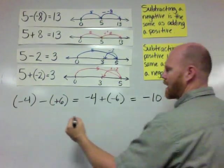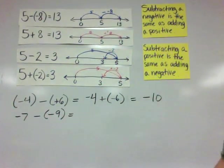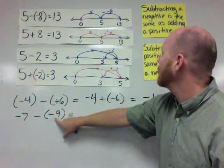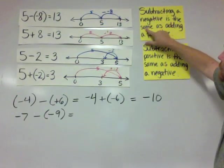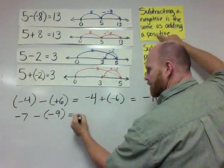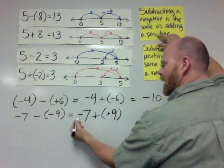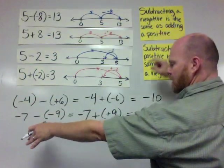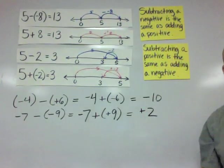Let's try negative 7 minus negative 9. We are subtracting a negative, and subtracting a negative is the same as adding a positive. So negative 7 minus negative 9 becomes negative 7 plus positive 9 — that's a hop of 7 units to the left and a hop of 9 units to the right, leaving us at positive 2.